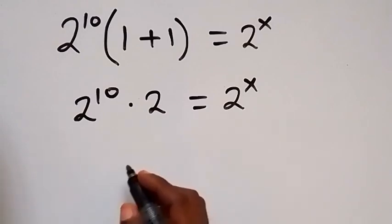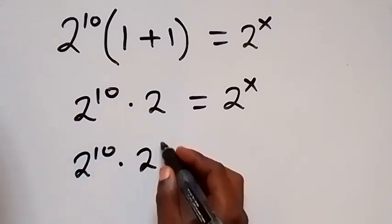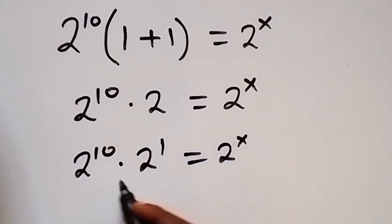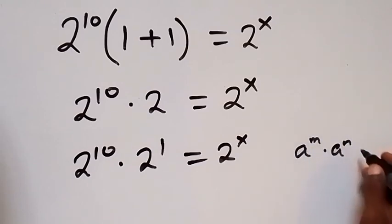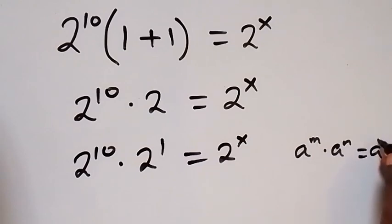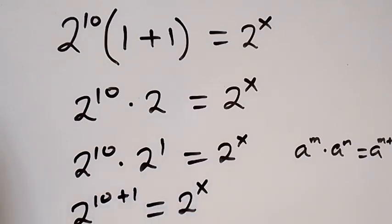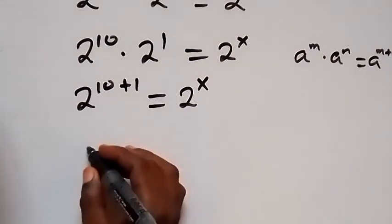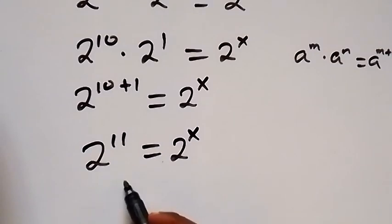The first way of doing this: we can write 2 raised to power 10 multiplied by 2 raised to power 1, which equals 2 raised to power x. From the law of indices, when we have the same base — a raised to power m times a raised to power n — this can be written as a raised to power m plus n. Applying that here gives 2 raised to power 10 plus 1, which equals 2 raised to power x. So 10 plus 1 is 11, giving 2 raised to power 11 equals 2 raised to power x. Since we have the same base, we equate the powers, and therefore x equals 11.